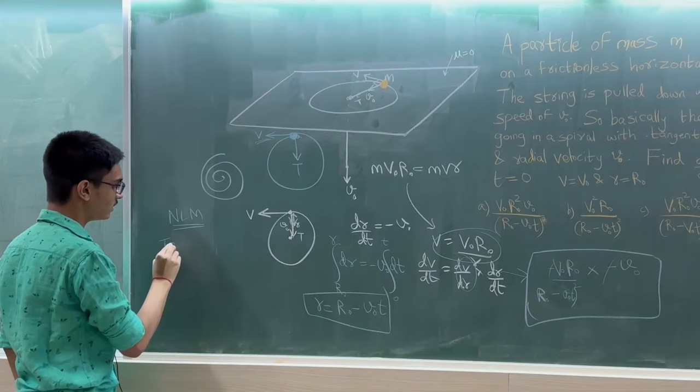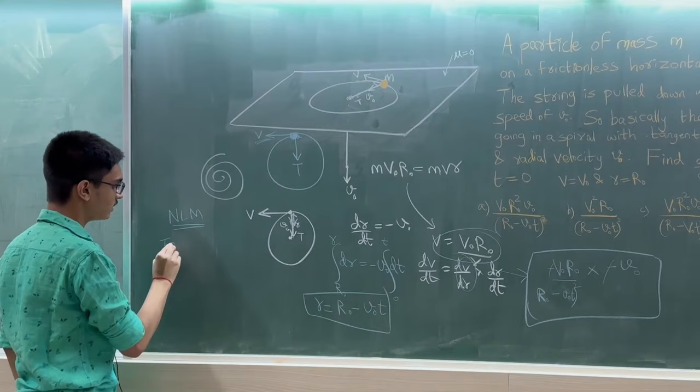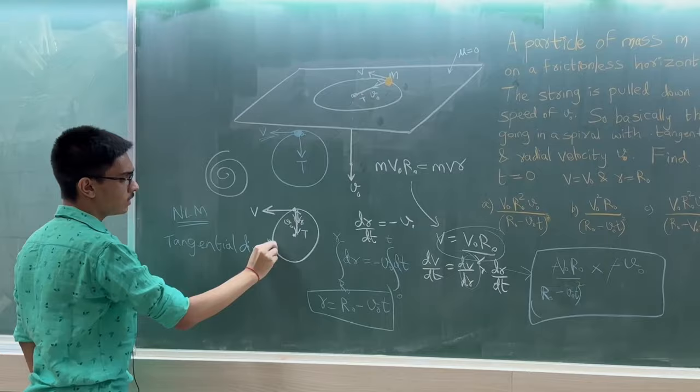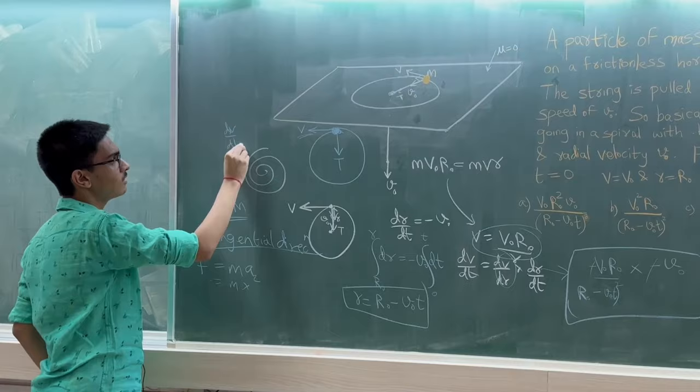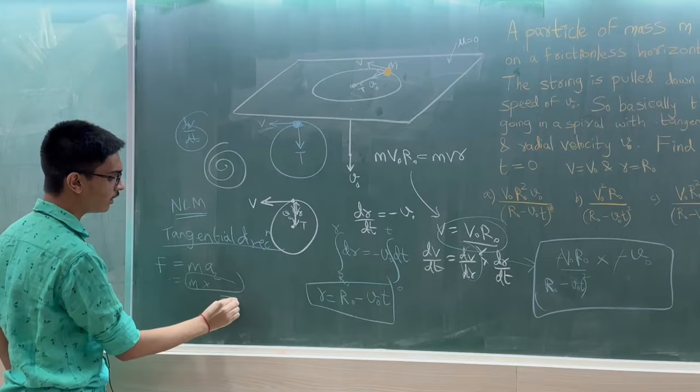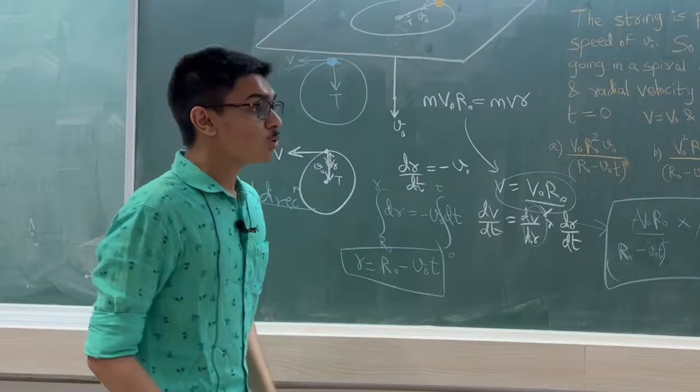So if I have to write Newton's laws of motion in the tangential direction, then what will I write? F equals mass into acceleration tangential. I know what is mass into acceleration tangential—it's dv/dt. I have calculated the value of dv/dt. I have taken option D from there. So right-hand side is non-zero. But left-hand side, in the tangential direction there is no force.